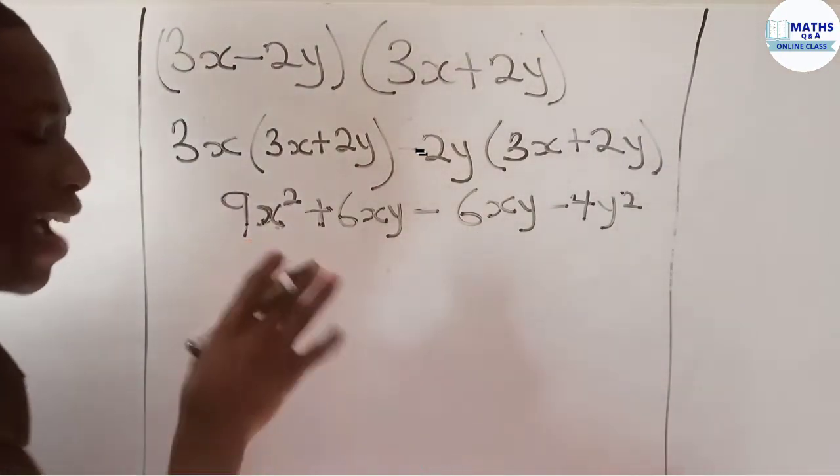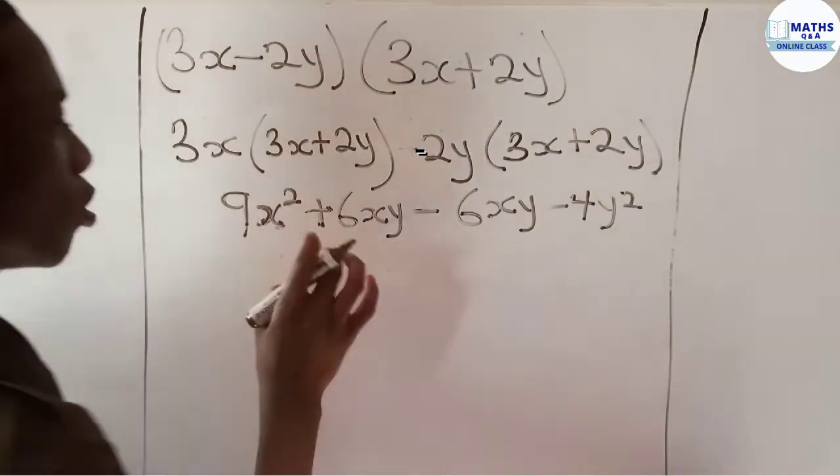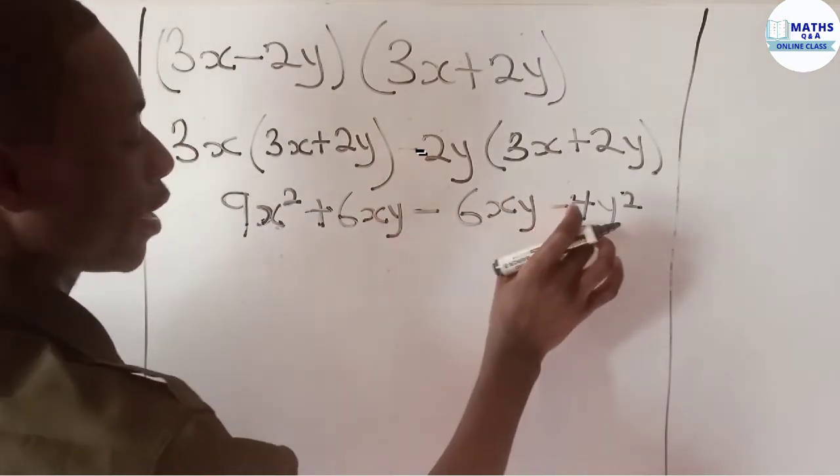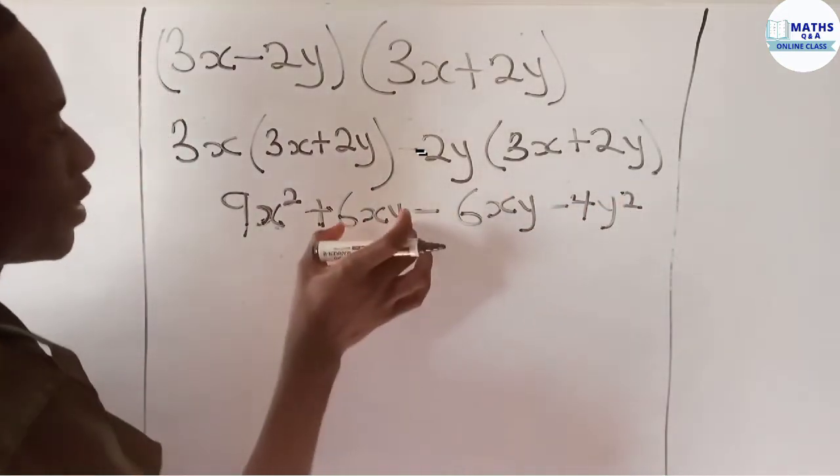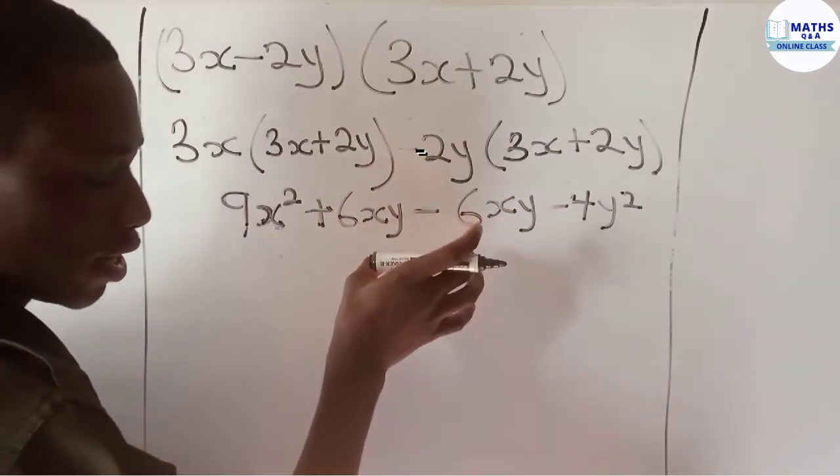So we have 9x squared, 6xy minus 6xy, and then negative 4y squared. You see that 6xy and 6xy are alike, they are the like terms. Unfortunately for you, they are already well arranged.